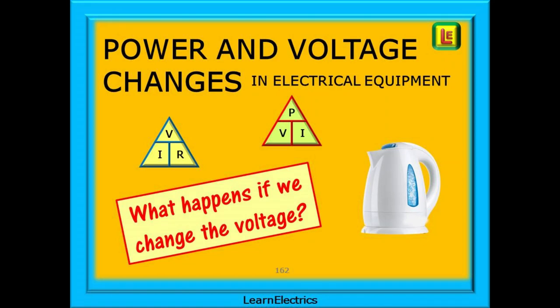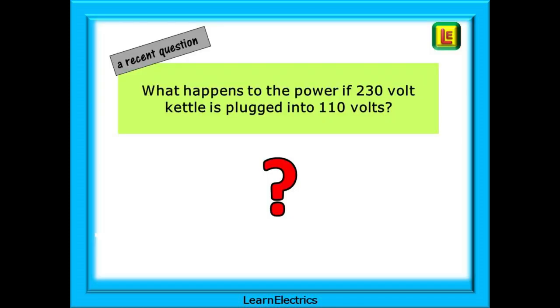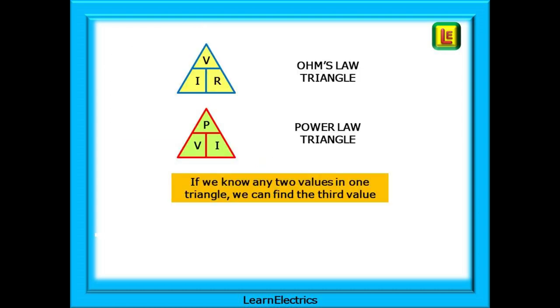If the power or voltage changes in a circuit, what effect does this have on electrical equipment? Just what does happen if we change the voltage? Quite recently we were asked what would happen if a 230 volt electric kettle was plugged into a 110 volt supply. In this short video we will look at how this affects the time taken to boil the water — the answer might surprise you. We will use Ohm's Law and Power Law to calculate these changes, step by step.